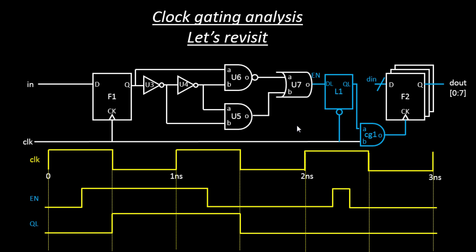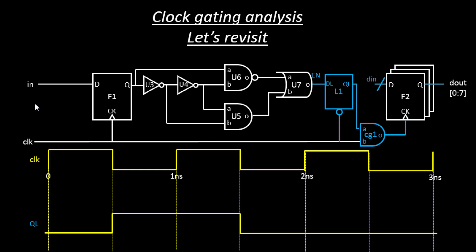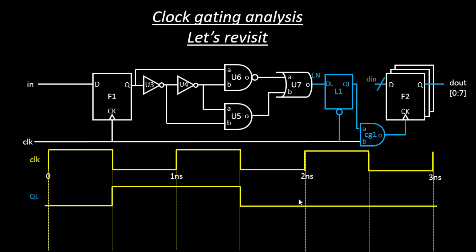We'll look into latch timing violations when we take up the same circuitry and examine flop-to-latch timing — that will clarify things further. We don't need a separate clock gating check here, and we've gotten rid of the glitch. Now let's analyze the waveform. You have this waveform at QL, and the AND gate here has one leg connected to the clock signal.